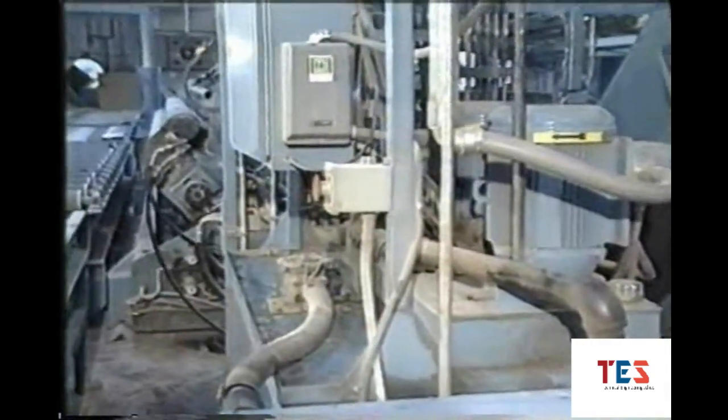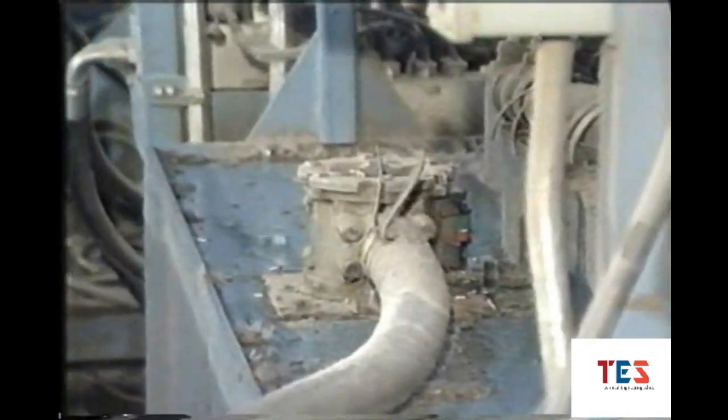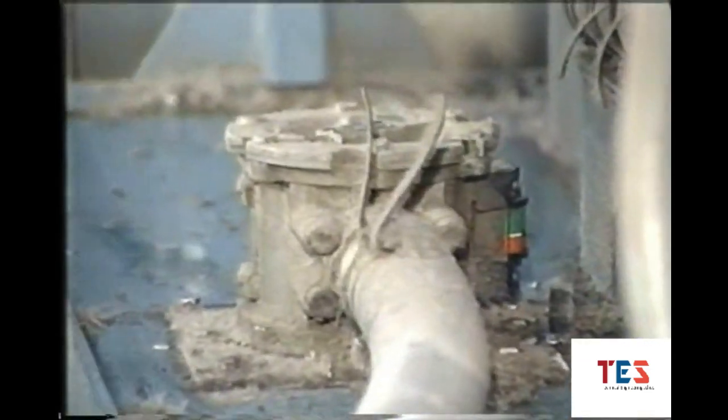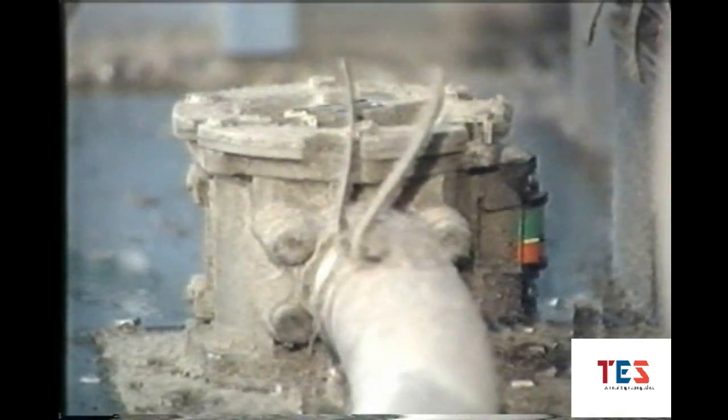Filters usually have indicators which show at a glance whether the element is clean, dirty, bypassing, or missing. A filter should be cleaned or changed when its indicator says it is dirty. Filters allowed to bypass hydraulic fluid permit contaminants to build up.